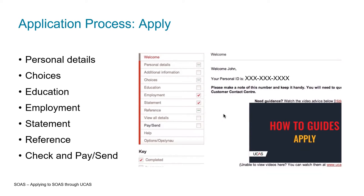You can also put in some details around employment — if you've had any relevant work experience and think that would add to your application, you can put that in there as well. You then have your personal statement, which I'll touch on in more detail later, and also a reference from somebody at your current school — it could be a teacher or a counsellor — who would speak to your academic ability and the course you're applying to. Then you just need to check everything, pay and send it through.